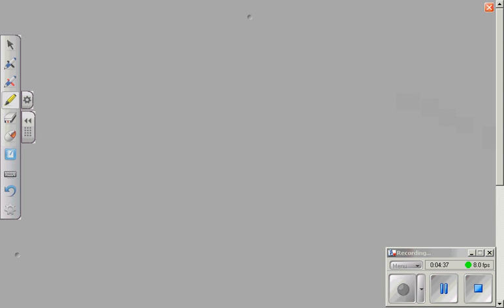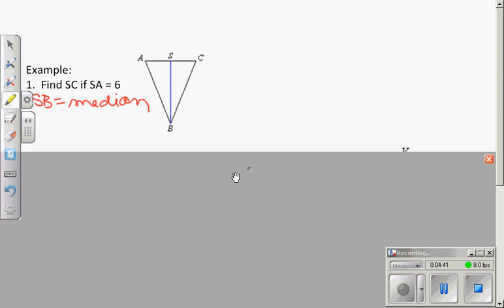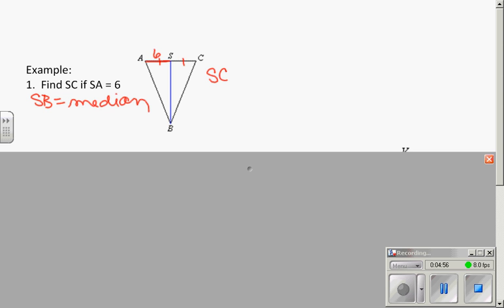A couple other special segments, examples here. First example. If SB is the median, find SC if SA equals six. Well, SA is six. If this is a median, that means these are the same. So very simply, SC is six.